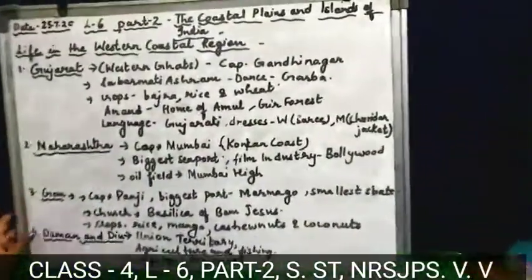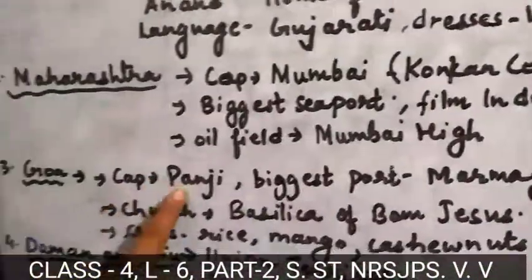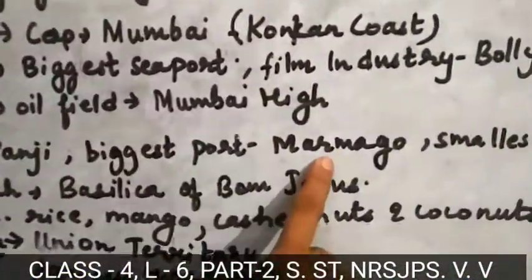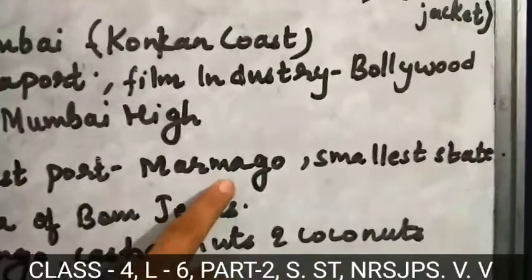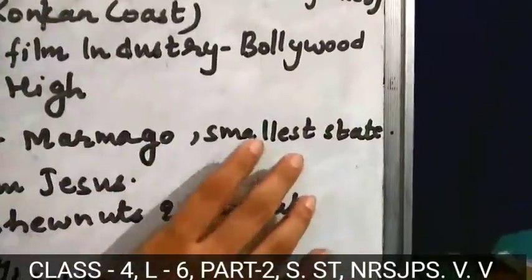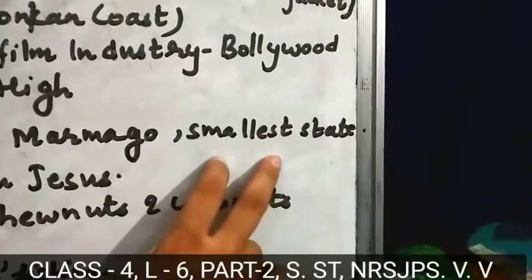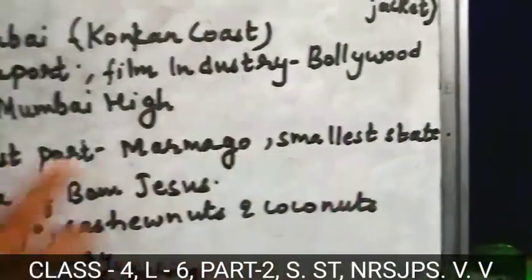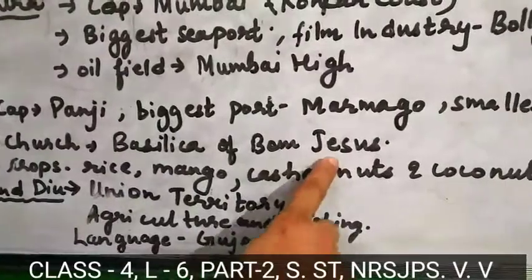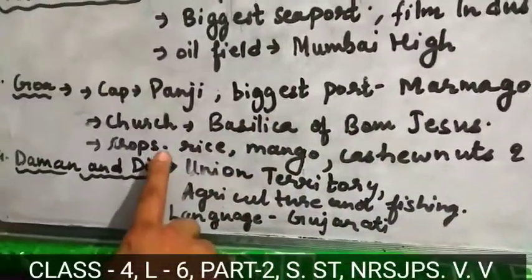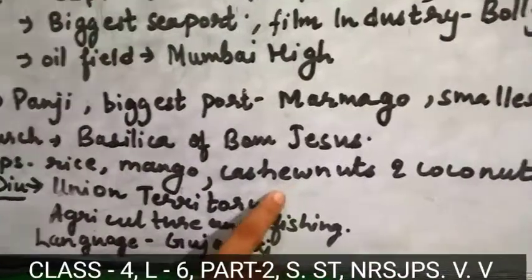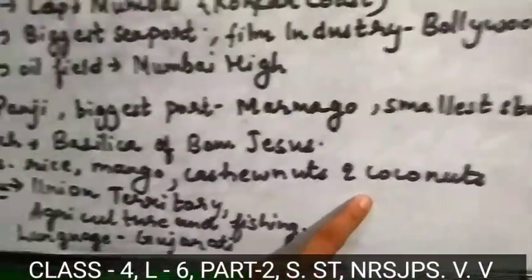Next is Goa. The capital of Goa is Panji. Its biggest port is Marmago. Goa is the smallest state of India. One famous church there is the Basilica of Bom Jesus. The crops which Goa people grow are rice, mango, cashew nut, and coconuts.